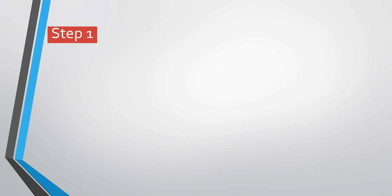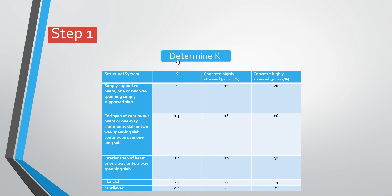The first step to check for deflection is to determine factor K. Factor K takes account of the type of structural system we are considering. This is presented in Eurocode 2 as Table 7.4N. This table has four columns: the structural system and the key value K. To get your K, it depends on the type of element you are designing. For simply supported beams or one-way spanning simply supported slabs, K equals 1. For flat slabs, K equals 1.2. For cantilever slabs or cantilever beams, K equals 0.4.